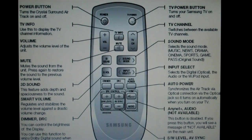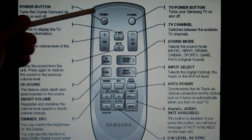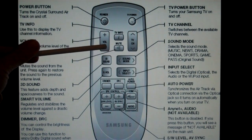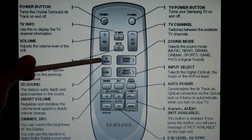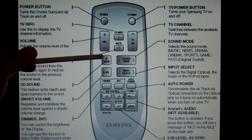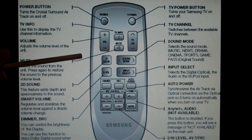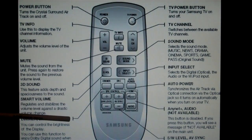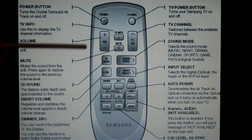This is a picture of the remote that comes with the soundbar kit. You have your power button, volume up and down, and mute. If you want to emulate a surround sound, you can toggle that on and off with this 3D sound button. You can dim the lights on the face of the soundbar, turn them down or turn them up.